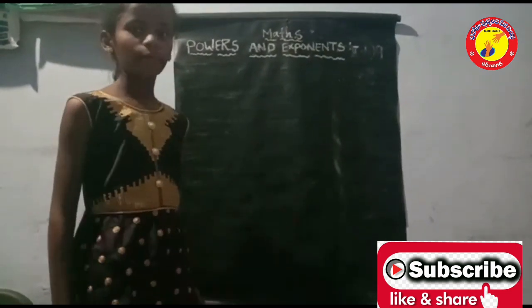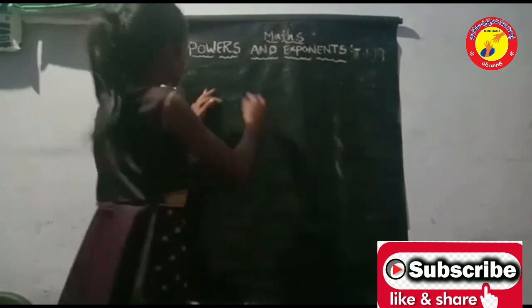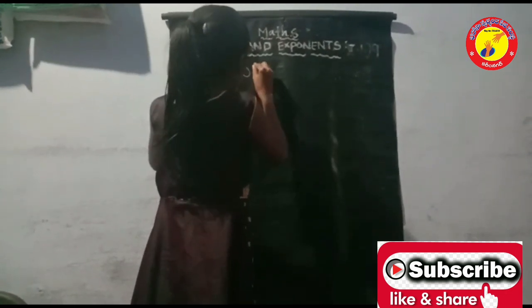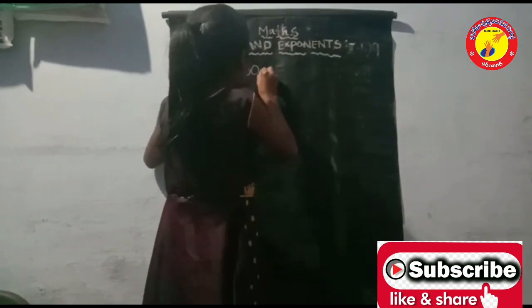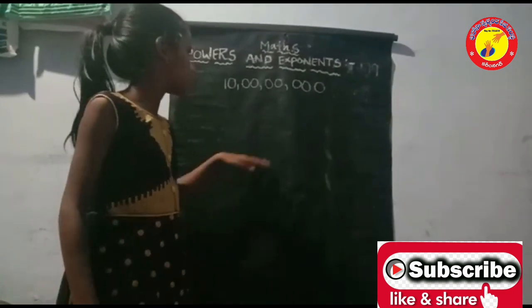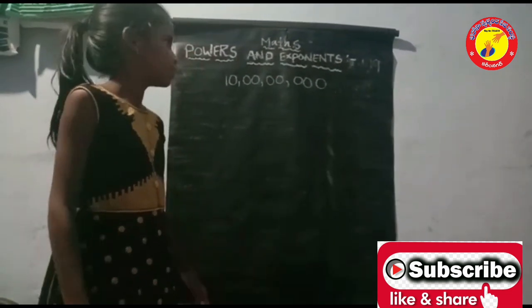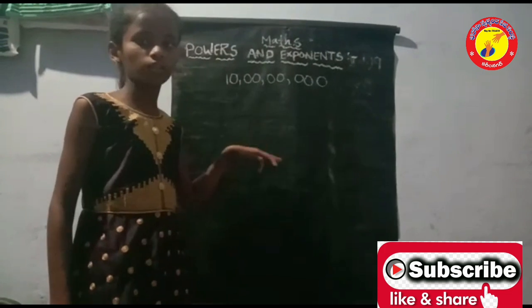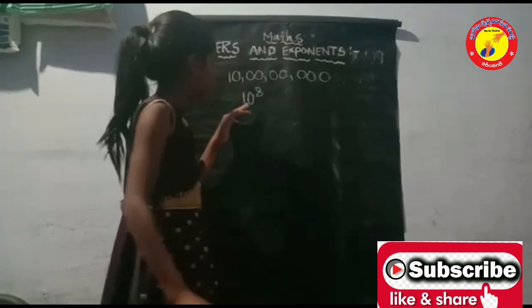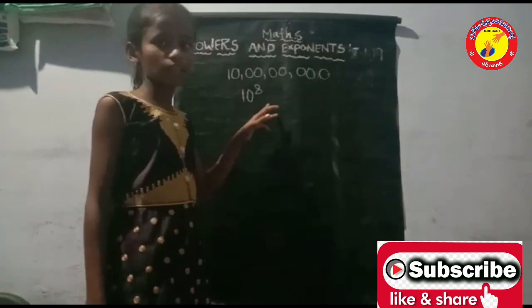For example, in India the population is 10 crores. It is very long form to write. In this case we can convert it into exponential form. The exponential form of 10 crores is 10 to the power of 8. Here, 10 is the base and 8 is the exponent.